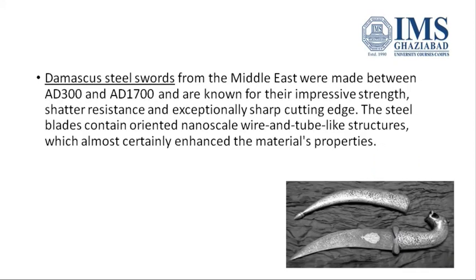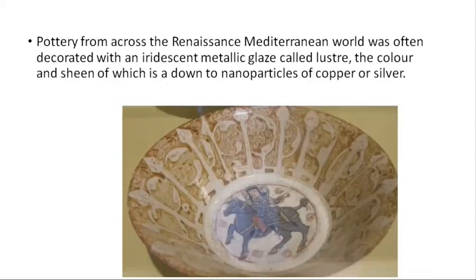Damascus steel swords had impressive strength, shatter resistance, and an exceptionally sharp cutting edge — these were again coated with nanoparticles. You can also see pottery which has a metallic glaze luster, again because of nanoparticles.